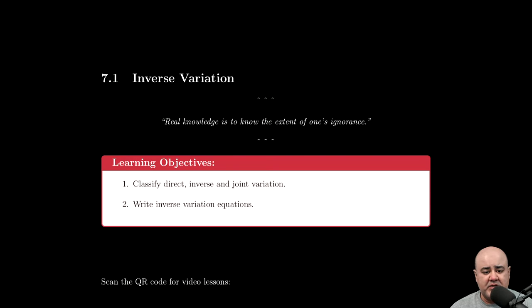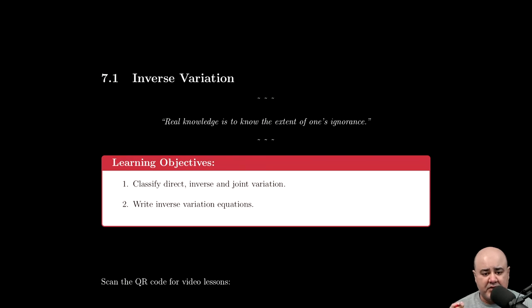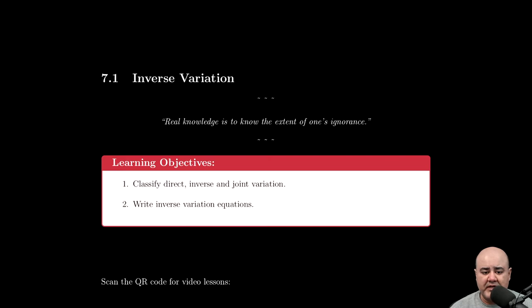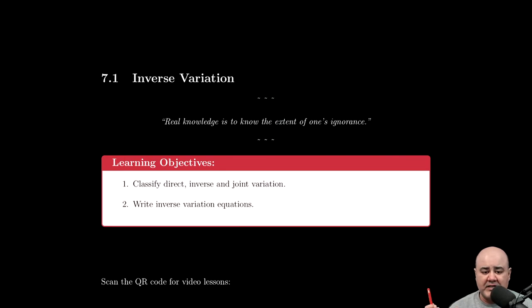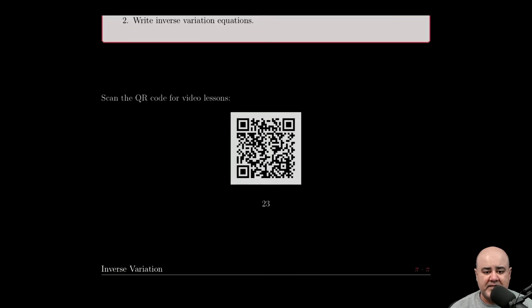Learning objectives for this section: by the end, you should be able to classify direct versus inverse versus joint variation. And while this objective literally says write inverse variation equations, we'll practice how to do that with direct and joint variation as well. Let's get started.